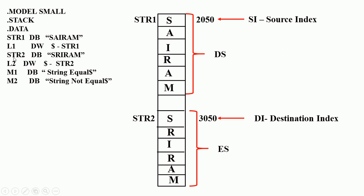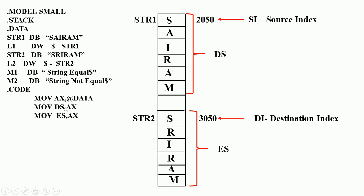Then str2 is defined as byte 'sriram', and the length l2 is defined as word $-str2. The ending address minus starting address gives the length of string 2. We also need to display appropriate messages: if str1 equals str2, display 'string equal'; if str1 is not equal to str2, display 'string not equal'. We need to initialize both the data segment and extra segment.